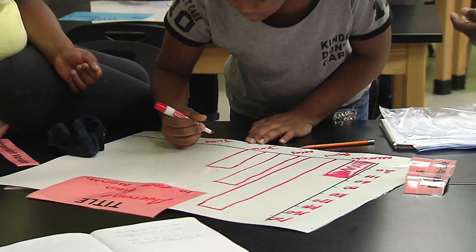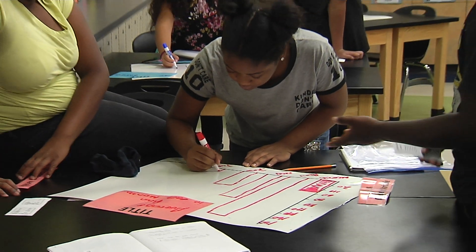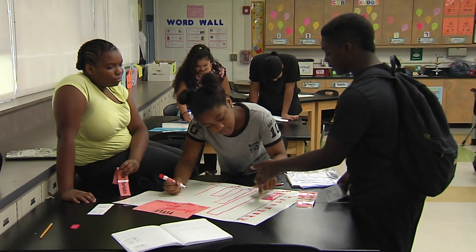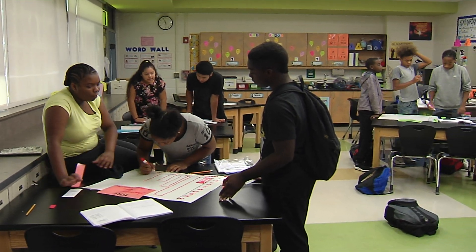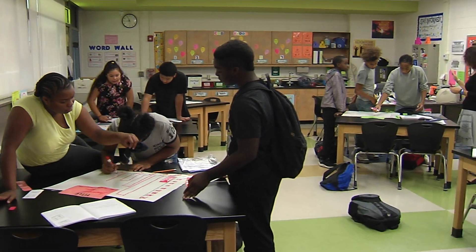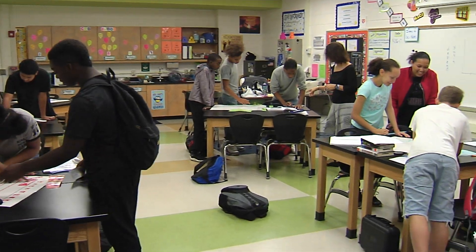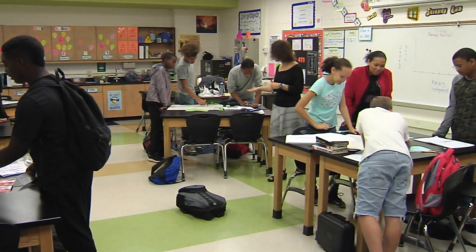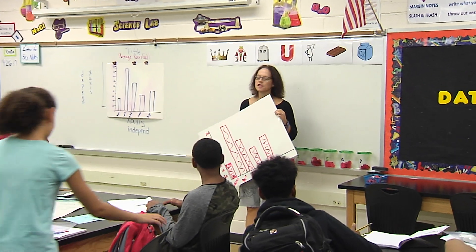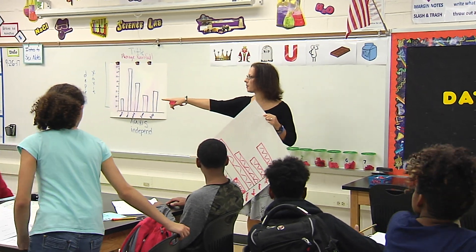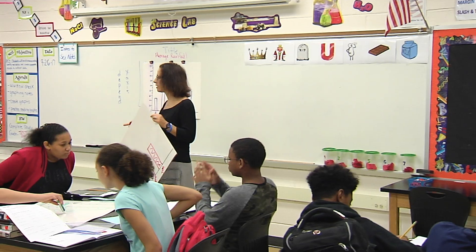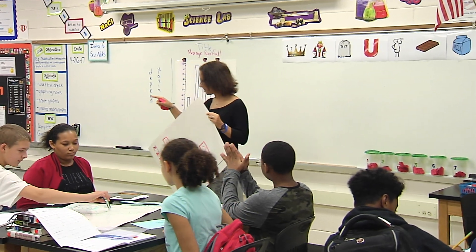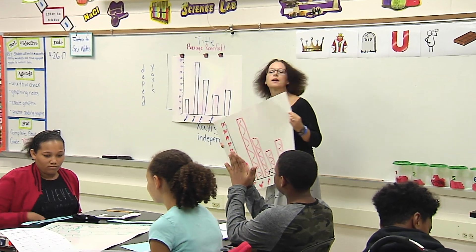It's a bar graph because we're not changing over time — we're looking at each category. Even though those are months, we're doing a bar graph because we're comparing each category. Look at your data chart. Some tables haven't drawn in all the bars yet — I can see your dots for your data, but go ahead and draw in the bars.